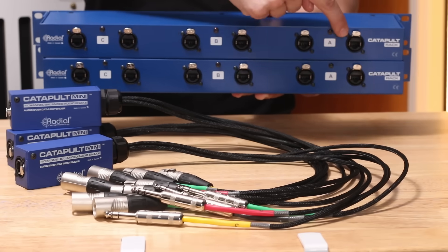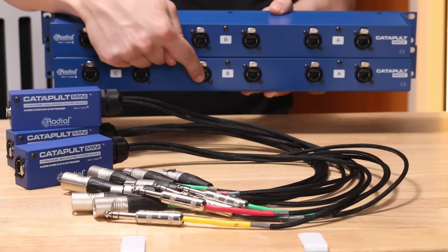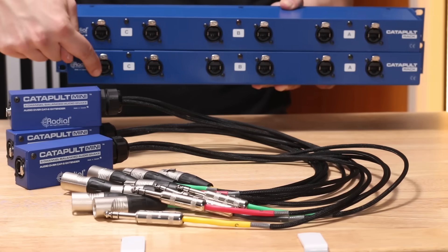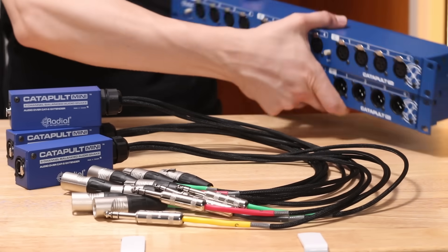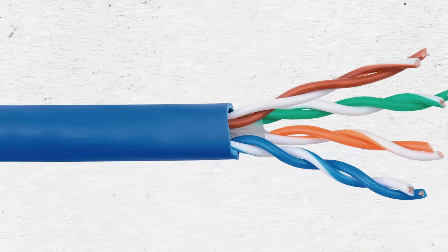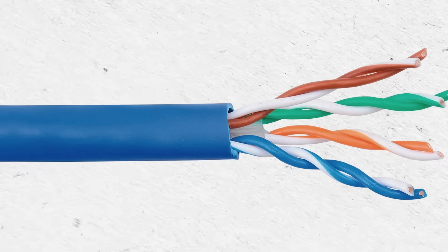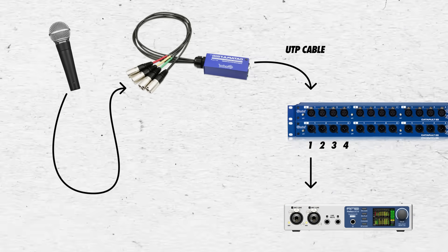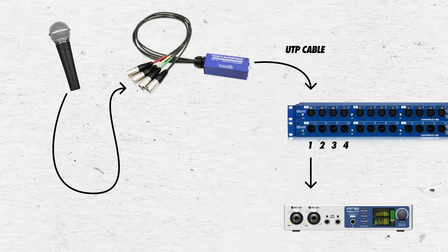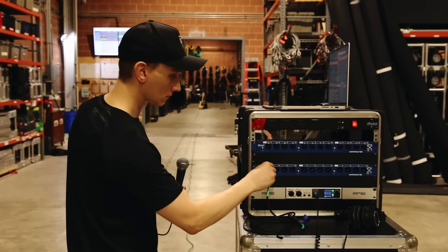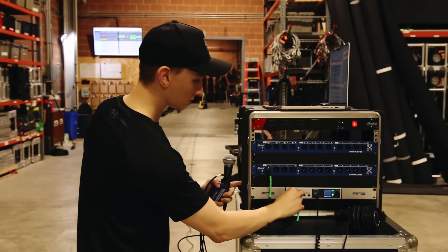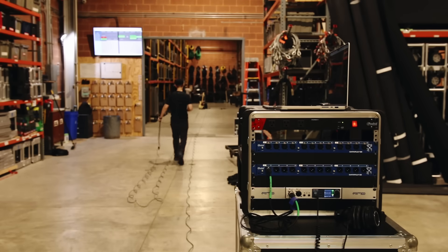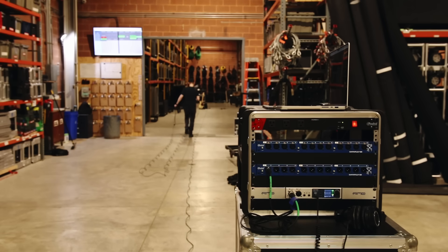Right here, I have a few devices from the Radial Catapult line. You can mix and match any of these to send four channels of balanced analog audio over a single Cat5 shielded or higher cable. Inside a regular piece of UTP — unshielded twisted pair — we'll find four pairs of twisted wires, and each pair can support a channel of balanced audio. I've currently got a long UTP cable connecting a Catapult Mini to bank A of the Catapult Rack RX, and the signal will be carried along one pair within the UTP, out of output one on the Catapult Rack RX, and into my audio interface.